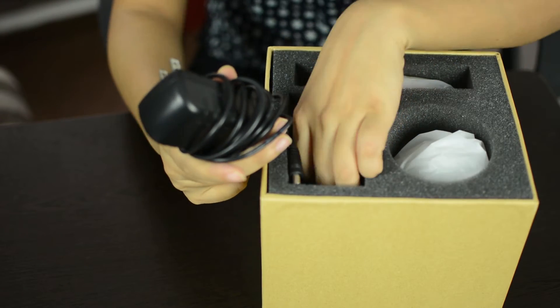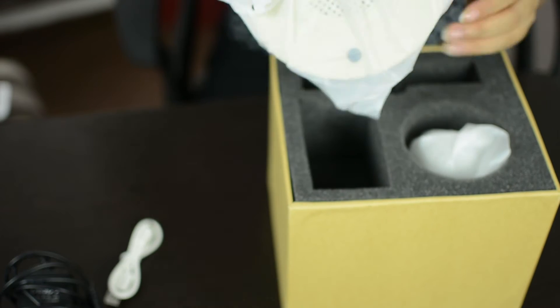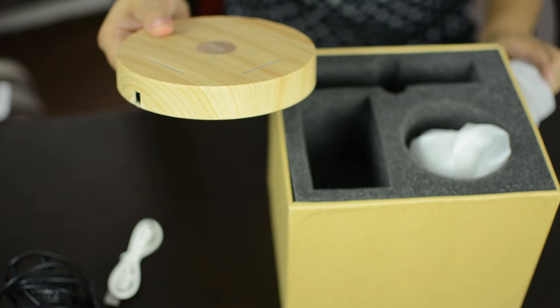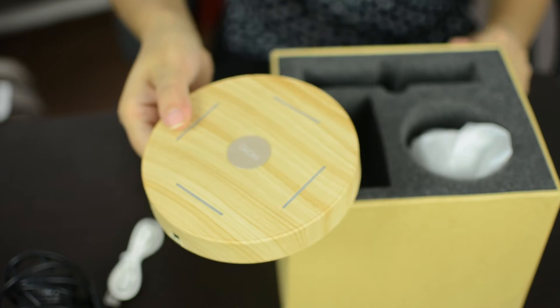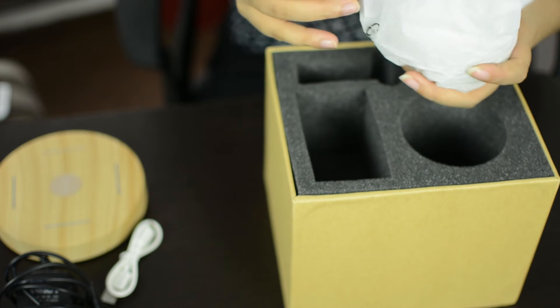So this is the charger and this is the USB cable. This one looks like a plate, so I guess it would be the magnetic plate. And finally, this is the Bluetooth speaker.